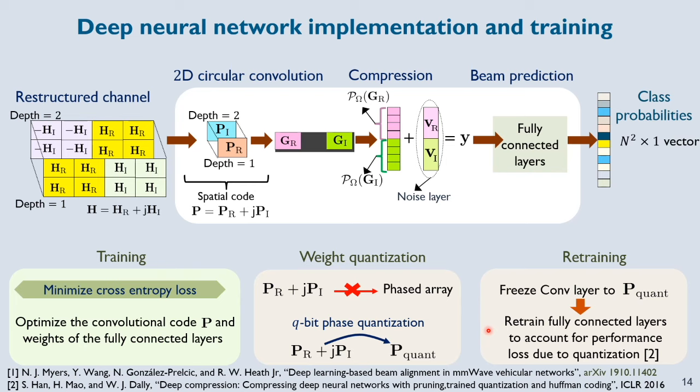I will now explain how this network can be implemented in a real system. First, the transmitter applies random 2D circular shifts of the optimized spatial code P which is PR plus JPI and the receiver acquires compressed channel measurements that are modeled by the vector of Y. These measurements are fed into fully connected layers which is implemented in software to estimate the best beam.